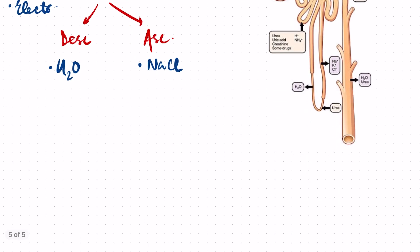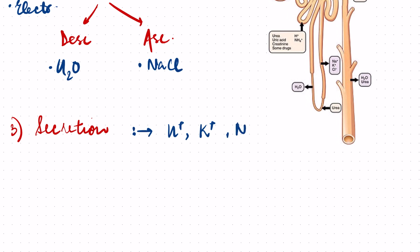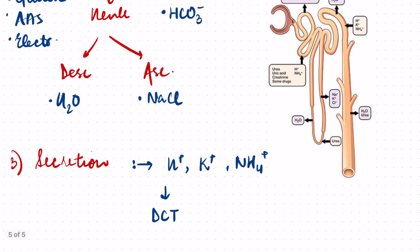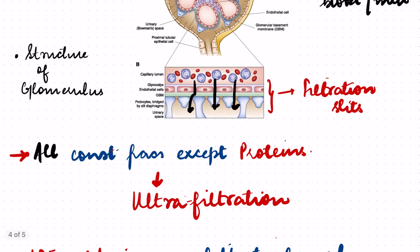Now talking about the third and last part — that is secretion. The most important ions that are secreted into the urine to be excreted are hydrogen ions, potassium ions, and ammonium ions. These are the ions which have to be secreted into the filtrate in order to be passed with the urine, and this function is mostly done in the DCT — the distal convoluted tubule.